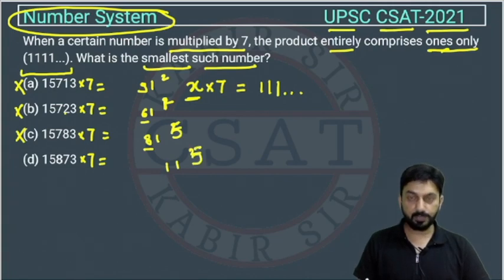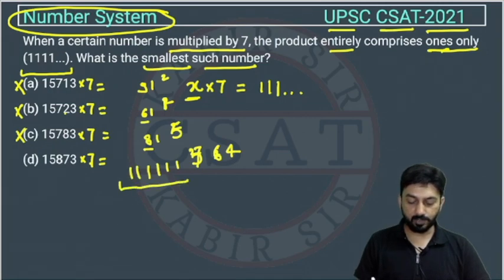7 times 5 is 35 plus 6 is 41. 7 times 1 is 7 plus 4 is 11. So in this we are getting all digits as 1s, so the answer is option D.